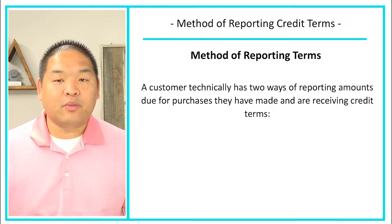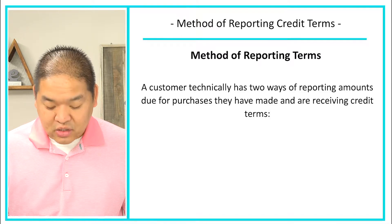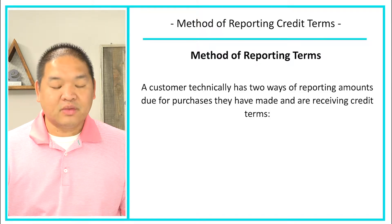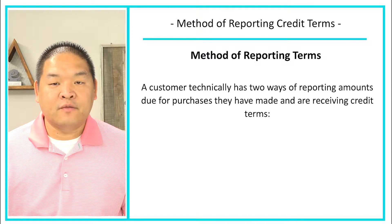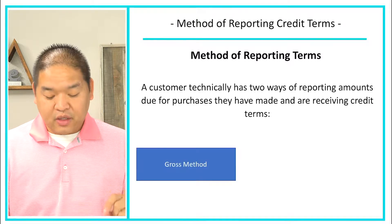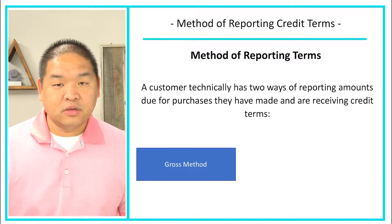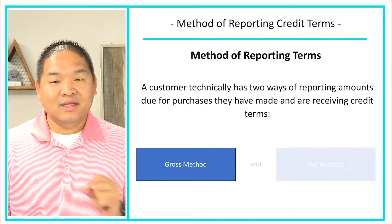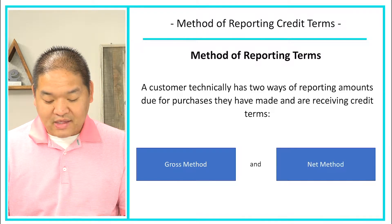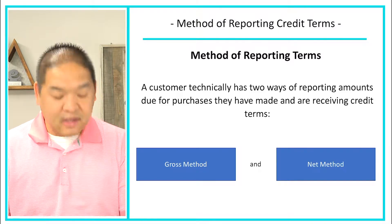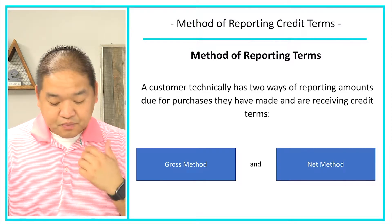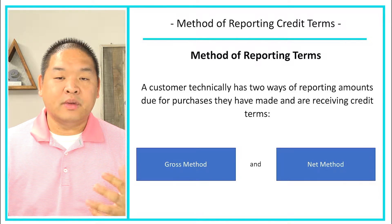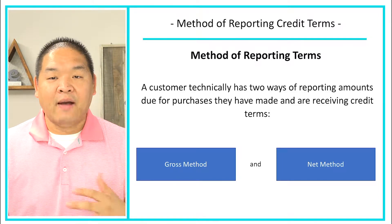A customer technically has two ways of reporting amounts due for purchases they have made and received credit from. The first method is what we call the gross method. The second method is the net method. So we've got the gross method and the net method.